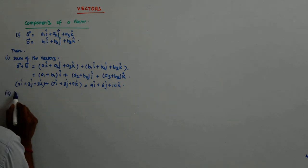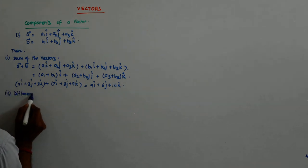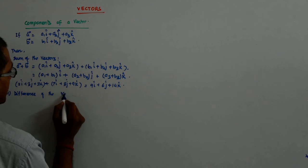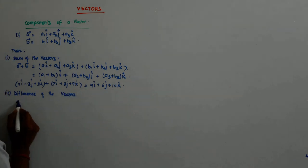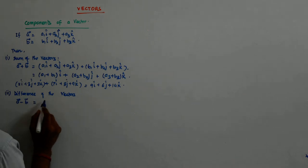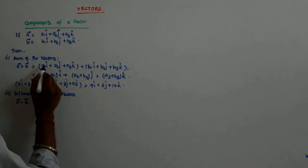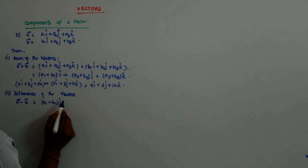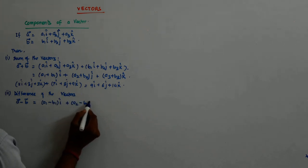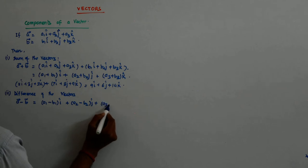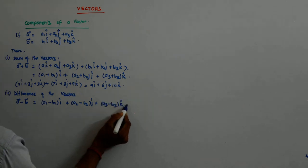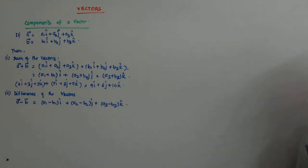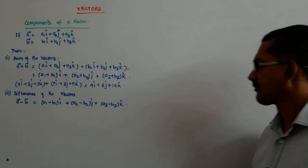Now, the difference of the two vectors, the difference of the vectors a minus b is given by the same thing. There will be a negative here and we will get a1 minus b1 i cap plus a2 minus b2 j cap plus a3 minus b3 k cap.